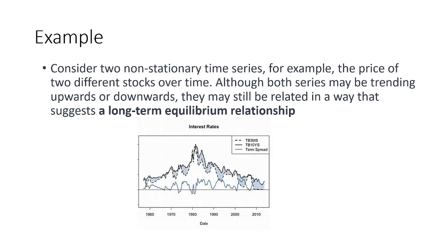For example, let's say there are two non-stationary time series — perhaps stock prices — that move over time and are both random walks. Both may be trending in some direction, but they may be related in a way that suggests there is a long-term equilibrium — meaning they converge to a long-term average. That is very useful information.